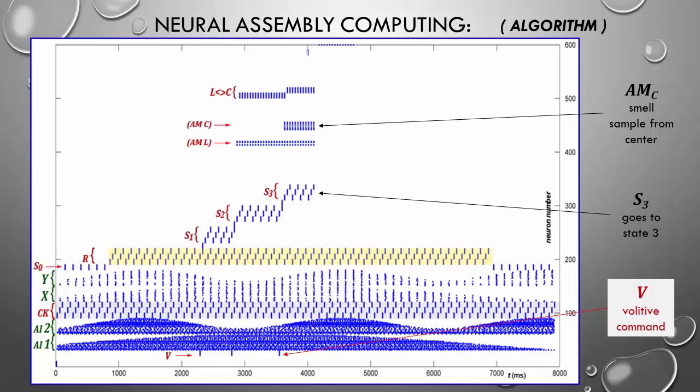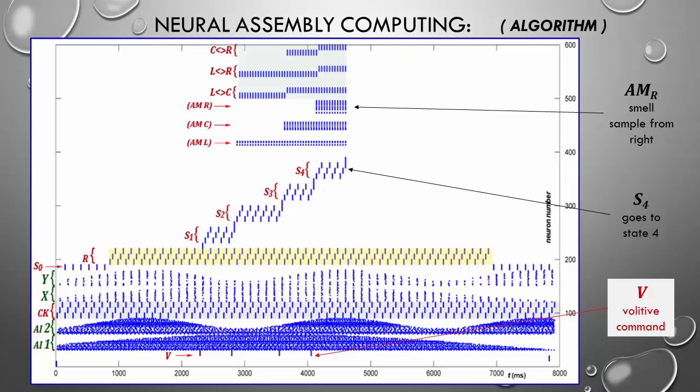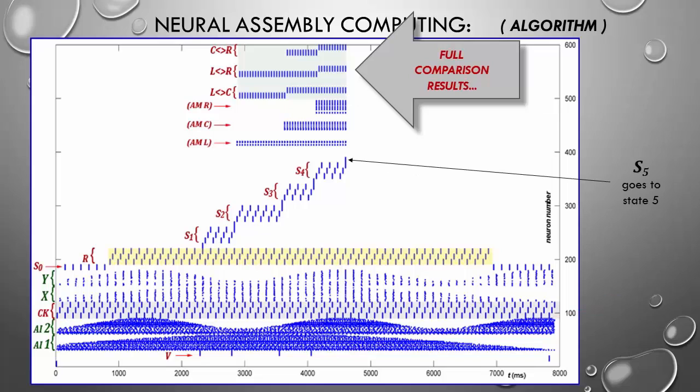However, now we can analyze what happens on another circuit, a topology that compares the samples. When the algorithm has only one sample, the comparators would say only that the content of the L memory is greater than the C memory and also greater than the R memory. Now, the content of the C memory is greater than the L, although the judgment is still partial. Another volitive command and the agent turns the head to the right, takes a smell sample and memorizes it. Now, the comparators present the complete result. The algorithm now has the comparator R greater than C active and R greater than L active.